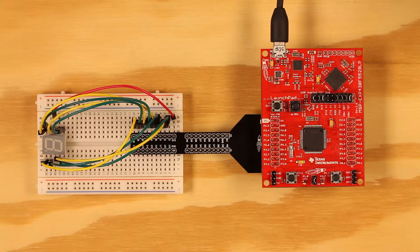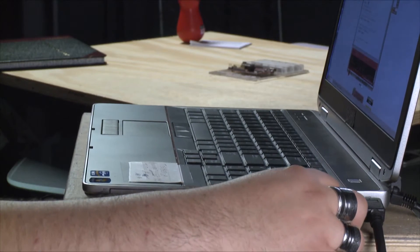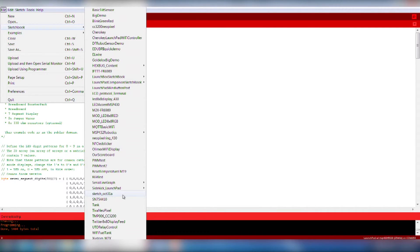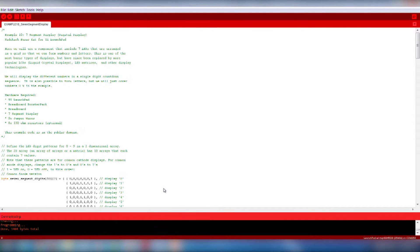Now let's get started with the software. First, plug your Launchpad to your computer over USB. Now open up example 10 from the Sidekick code examples. This code will display digits from 0 to 9. You can learn more about the concepts in this circuit online under the example page.